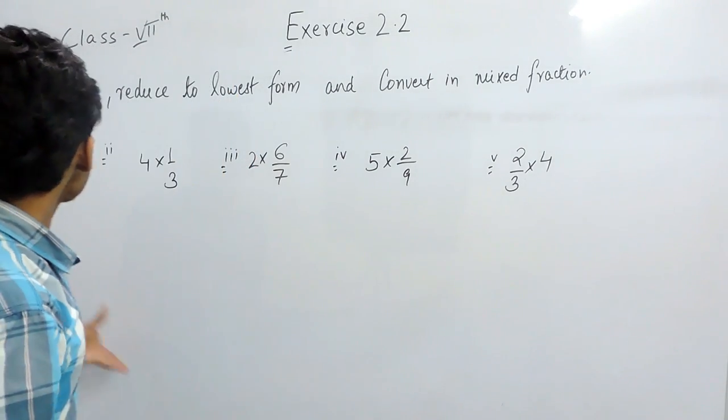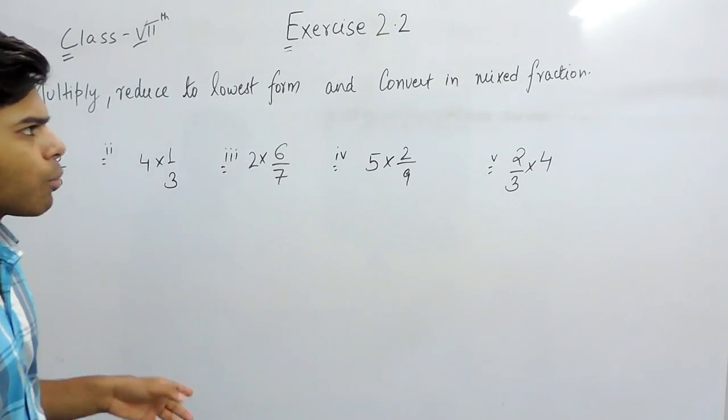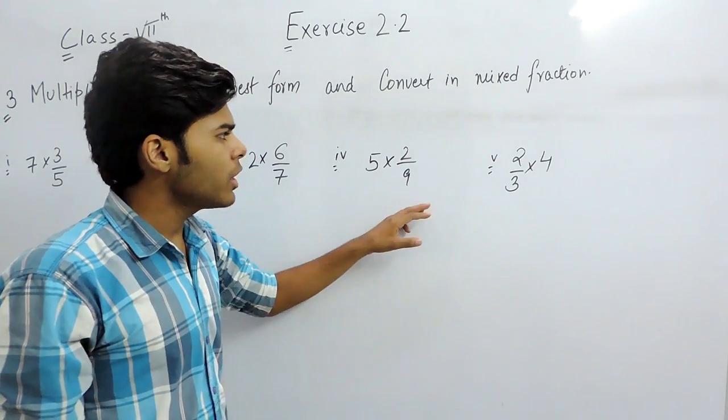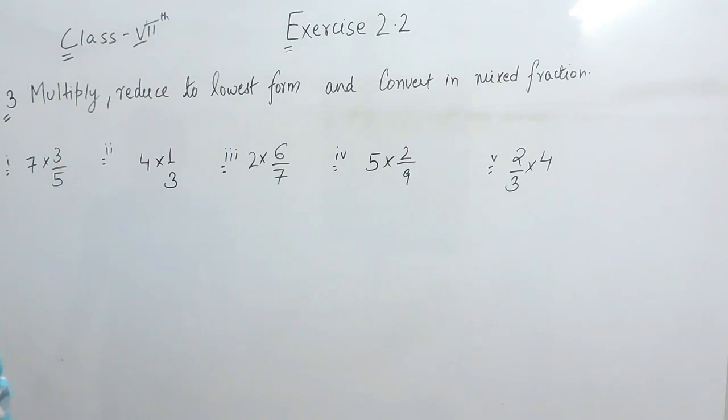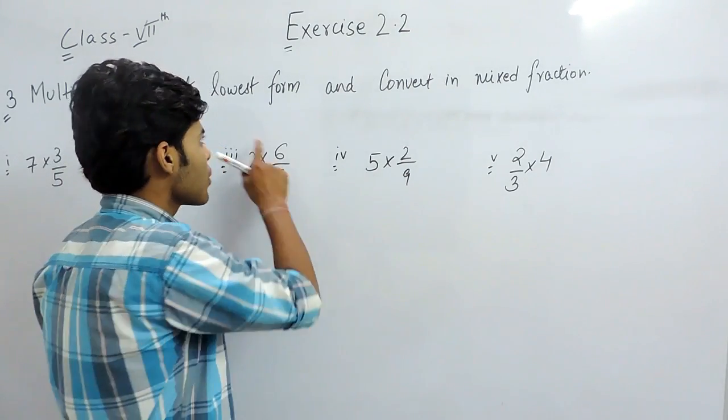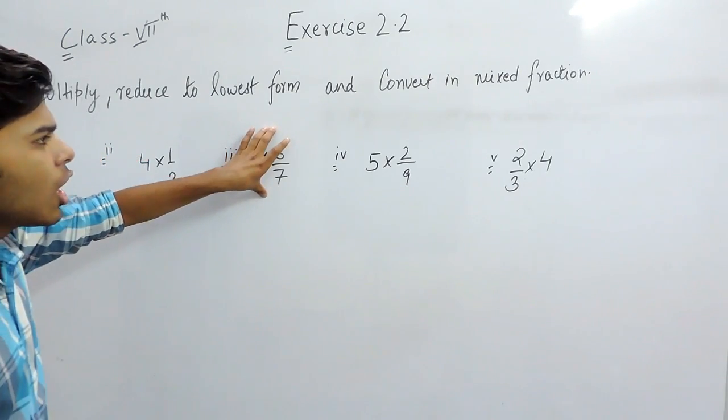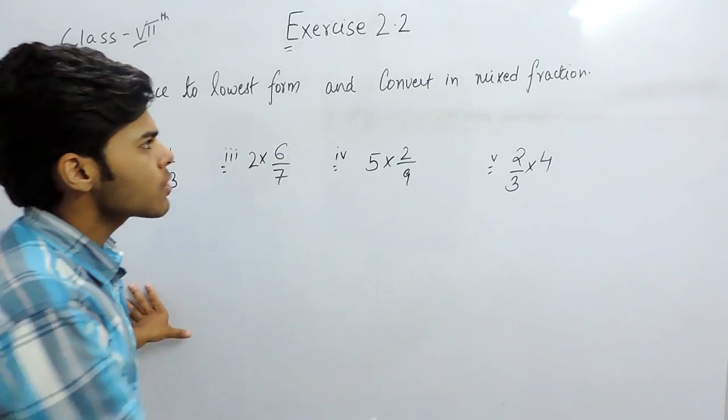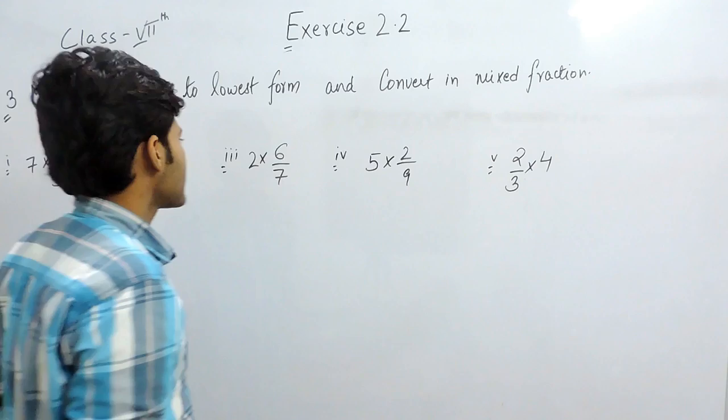Hello students, now let's solve the third question of exercise 2.2. First of all, in this video we will solve the first 5 parts. This says that first of all we have to multiply these numbers, then if it is reducible to its lowest form we will convert it in its lowest form, and at last we will write it in mixed fraction.